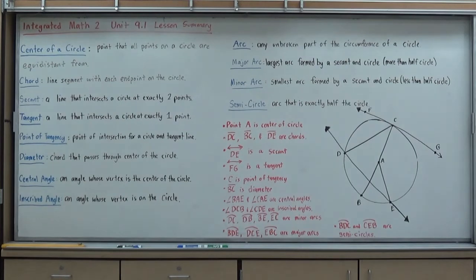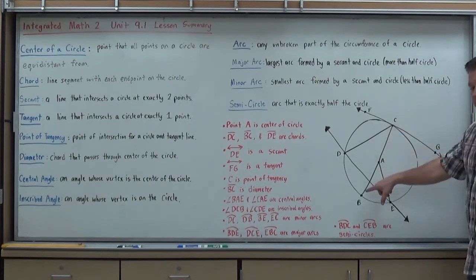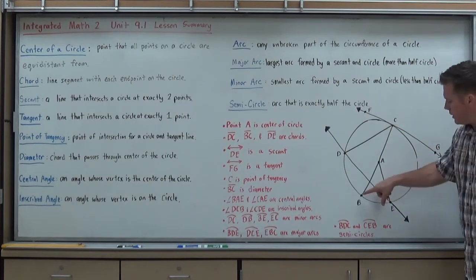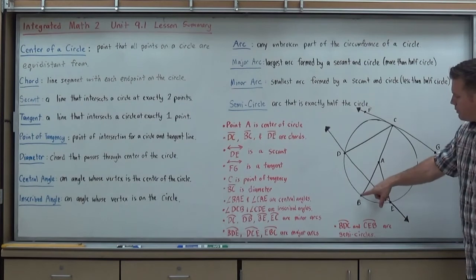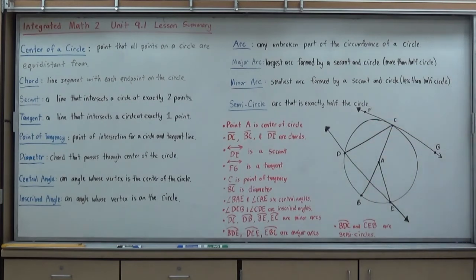And lastly, a semicircle. You've probably heard that before. Semi meaning half, so it's half a circle. We're talking about arcs. So if you can identify your diameter, then you're able to identify your semicircle. Arc C, E, B is a semicircle. And arc B, D, C is a semicircle.